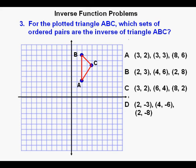The coordinates of A are (2, 3), the coordinates of B are (2, 8), and the coordinates of C are (4, 6). Then we can write the inverses of these coordinates right below them. A becomes (3, 2), B becomes (8, 2), and C becomes (6, 4), and these inverse points match answer C.